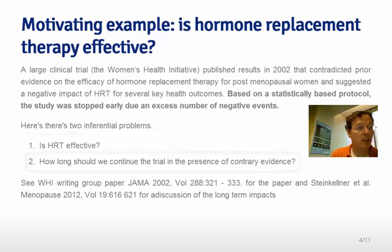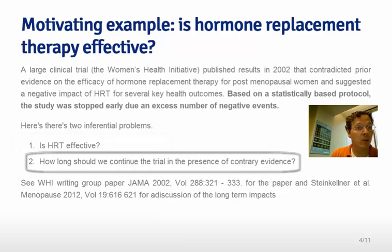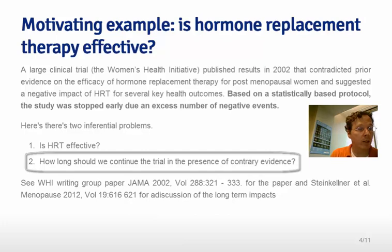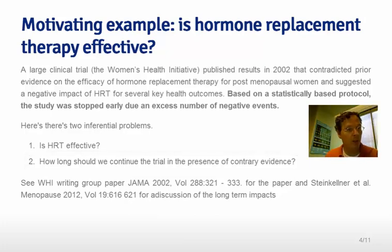There's a second question that's actually much harder, which is how long should we continue the trial in the presence of contrary evidence? This is a very challenging question and depends on many factors, including morality. How long can we give a treatment relative to a certain amount of evidence against it to otherwise healthy people, versus how long can we run a trial — can we stop a trial just based on random fluctuations that one would expect to occur with low sample sizes? One must balance between these considerations to actually achieve the evidence required to make medical decisions.